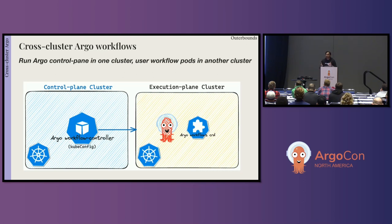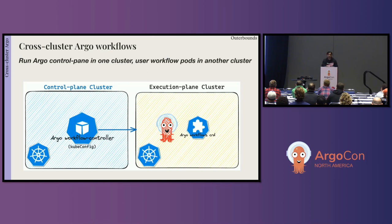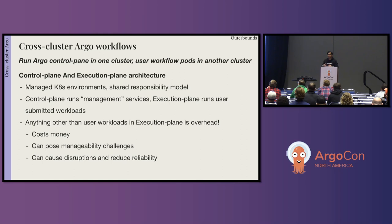If you want to run kubectl commands locally or connect to any cluster, if you have the kubeconfig you have access to the Kubernetes cluster. So you can literally take the Argo workflows controller, run it anywhere — even on your laptop — as long as you have the kubeconfig of the appropriate cluster. With the right kubeconfig, you can run the Argo workflows controller in one cluster and have workflows actually executing in a different one. This also enables the notion of managed Kubernetes environments and the shared responsibility model — one of the more modern ways applications are getting deployed.